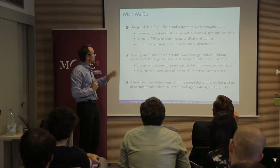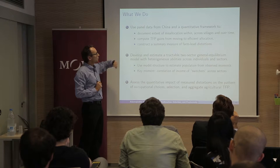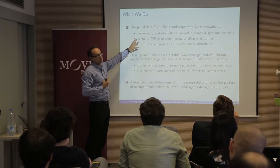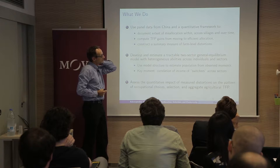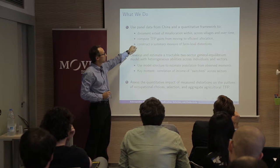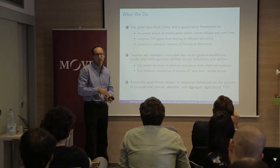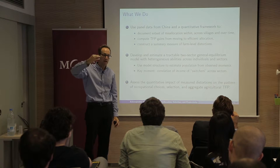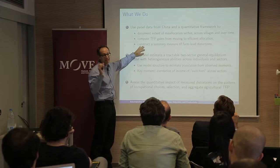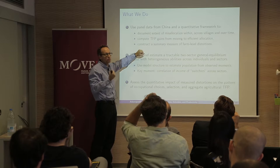What we're going to do is use this data from China and a quantitative framework to first show some pictures motivating the extent of misallocation in agriculture — looking at whether you see it across villages or whether it changes over time. Then I'll show how important that misallocation is: if factors were allocated better, how much productivity or output could go up in this economy in a static sense. I'll use that analysis to come up with a summary measure of misallocation.